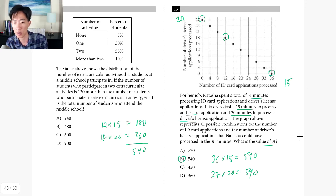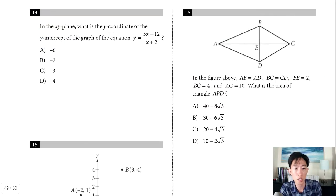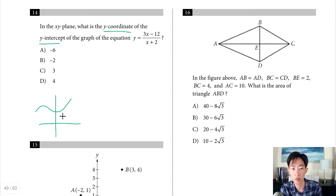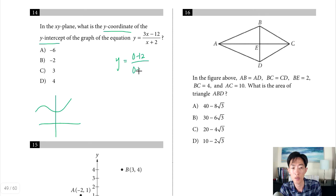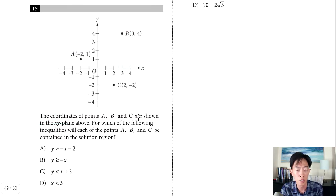Question 14: find the y-coordinate of the y-intercept of the given equation. At the y-intercept, x always equals 0. Plugging in x equals 0: 3 times 0 minus 12 over 0 plus 2 equals negative 12 divided by 2 equals negative 6. So the y-coordinate of the y-intercept is negative 6.